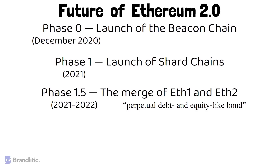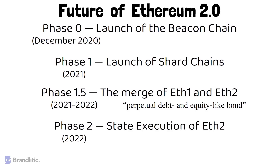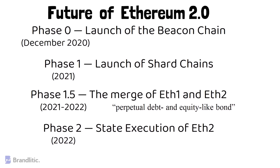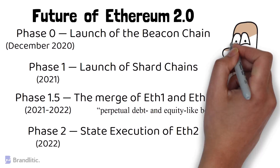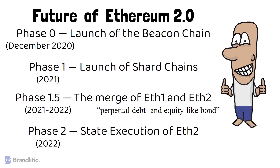In the final phase, Phase 2, the shards will become fully functional and compatible with smart contracts. The final phase of Ethereum 2.0 is scheduled to launch in 2022, and it has already become a hot topic of debate. Personally, with its added advantages and scalability, Ethereum 2.0 will gain more and more interest from investors in the years ahead.